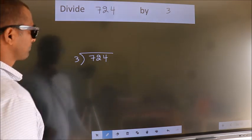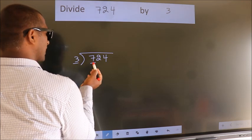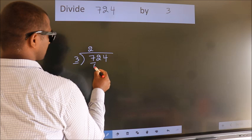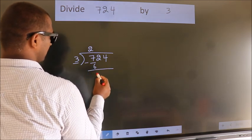Next. Here we have 7, here 3. A number close to 7 in 3 table is 3 times 2, 6. Now we should subtract. We get 1.